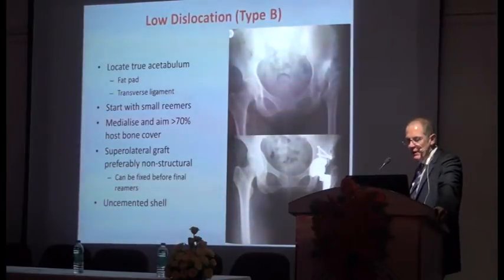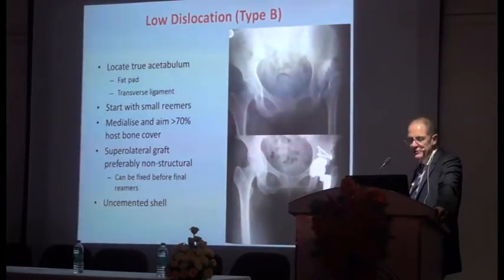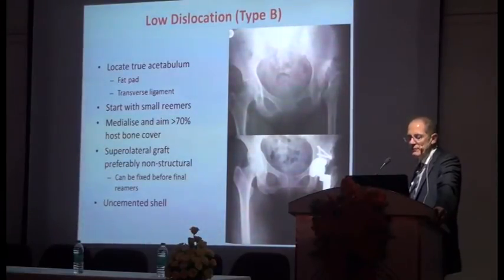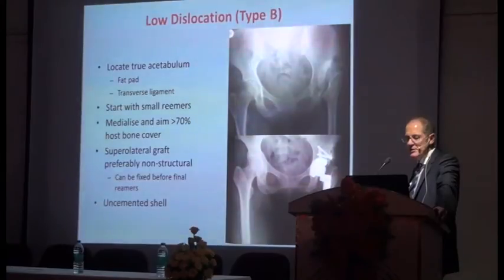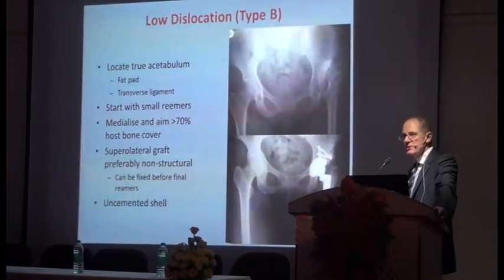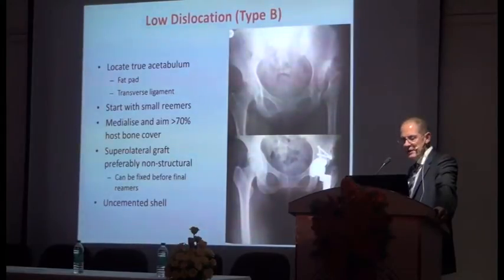The graft can be a cut piece of the femoral head or reamings from the femoral head, used with uncemented shells. I agree with what Dr. Bowes said earlier — you want to go for as big a head as possible, and it's an ideal situation to use something like a delta motion cup.